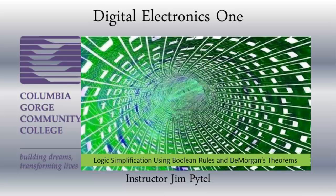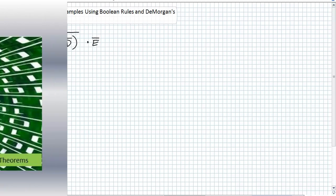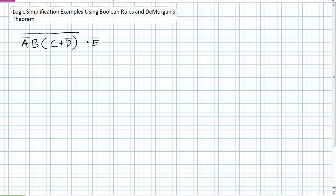Good day, this is Jim Pytel from Columbia Gorge Community College. This is Digital Electronics 1. This lecture is entitled Logic Simplification Examples Using Boolean Rules and DeMorgan's Theorem. We've had a previous round of examples dealing with just Boolean rules, and I stayed away from DeMorgan's Theorem, then I introduced DeMorgan's Theorem, did a bunch of examples, but now we're going to combine them together.